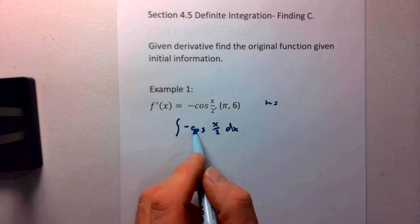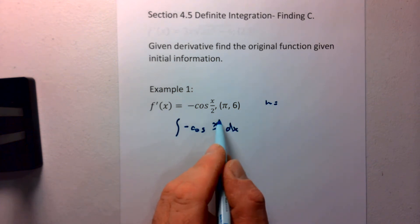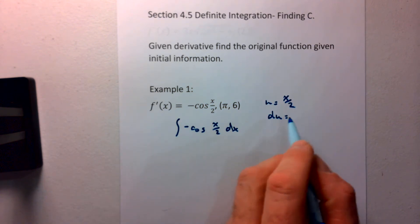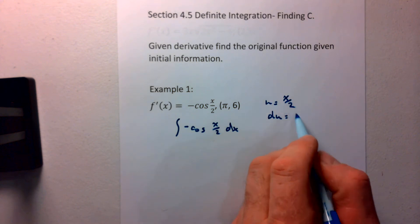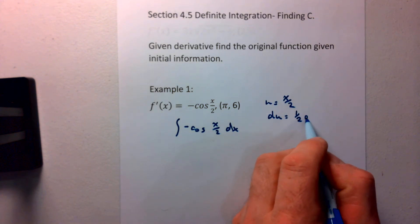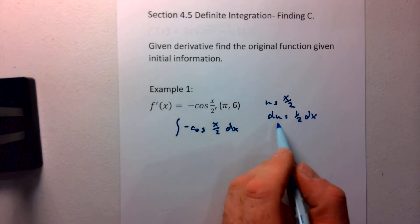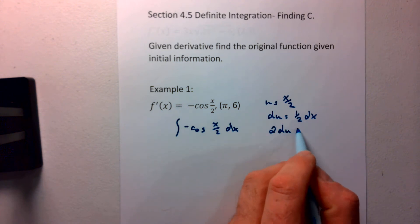Our u, since we're working with a trig function, is going to be the angle that we're working with. So we're going to find the derivative there. The derivative of x over 2 is 1 half dx. So we don't need the 1 half. We can multiply it 2 over, so we have 2 du equals our dx.